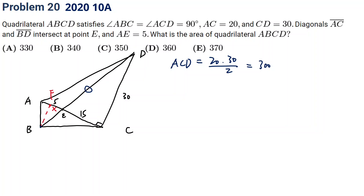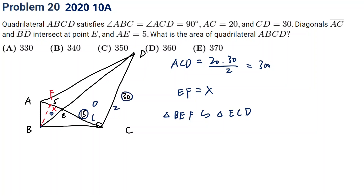We can assume EF equals x. The reason we're adding this line is because we can use similar triangles. Triangle BEF is similar to triangle ECD, and the ratio is 15 to 30, so 1 over 2. So if EF is x, then the corresponding side will be 2x. Taking triangle ABC out, this is the height. So this is x + 15, and the other part is 5 - x, and the height is 2x.